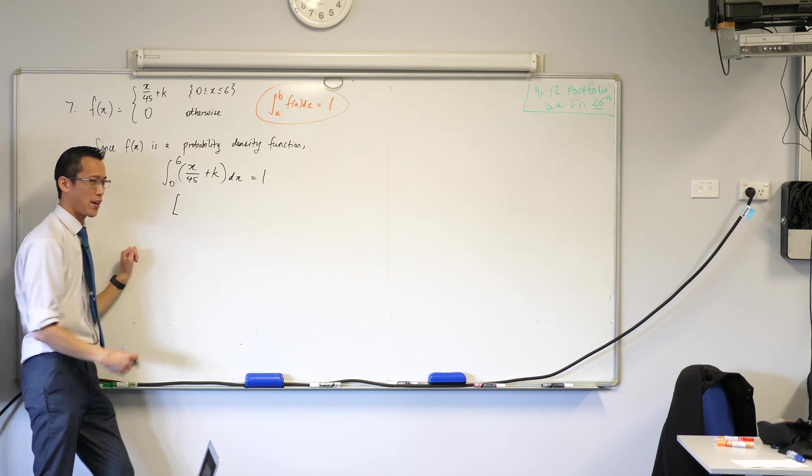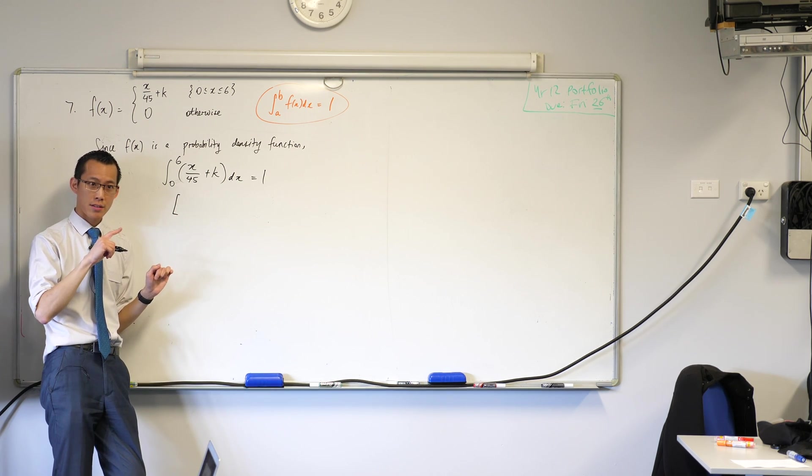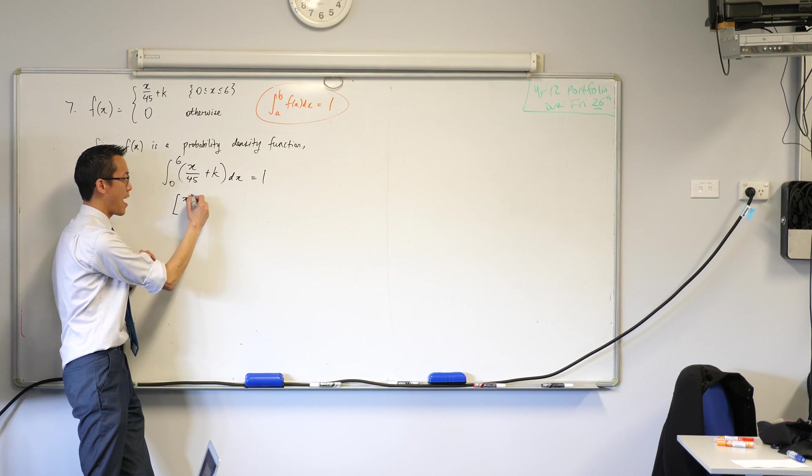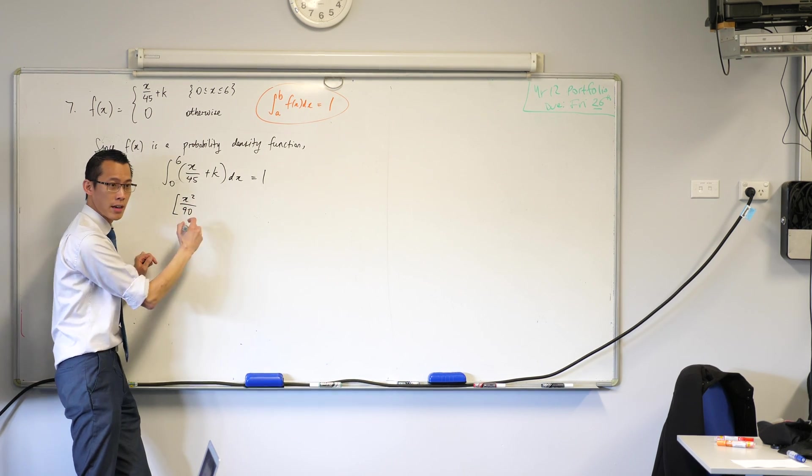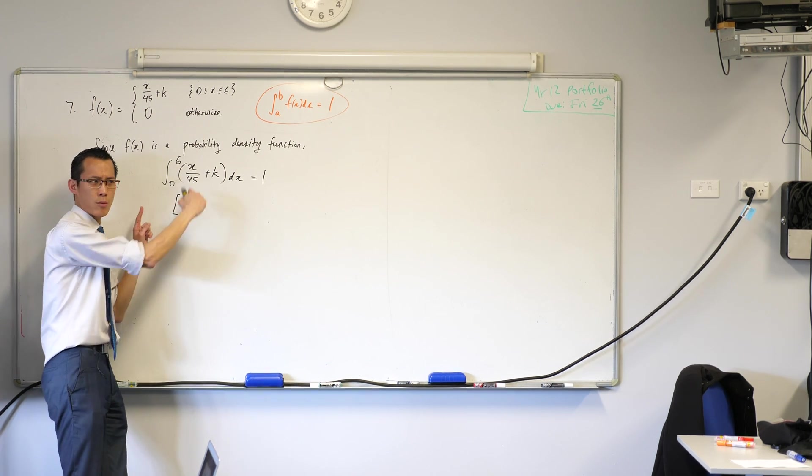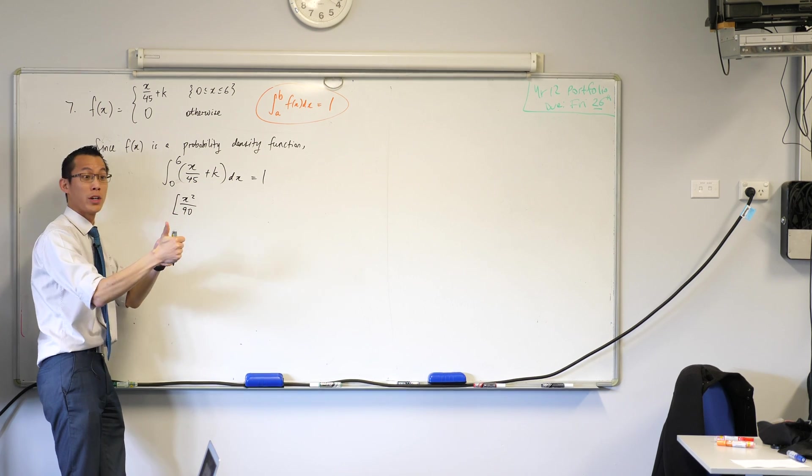My primitive function will be x - careful - it's going to be x squared over 90. And you can just mentally check, like, if I differentiate that, will I come back? Yes, I will.